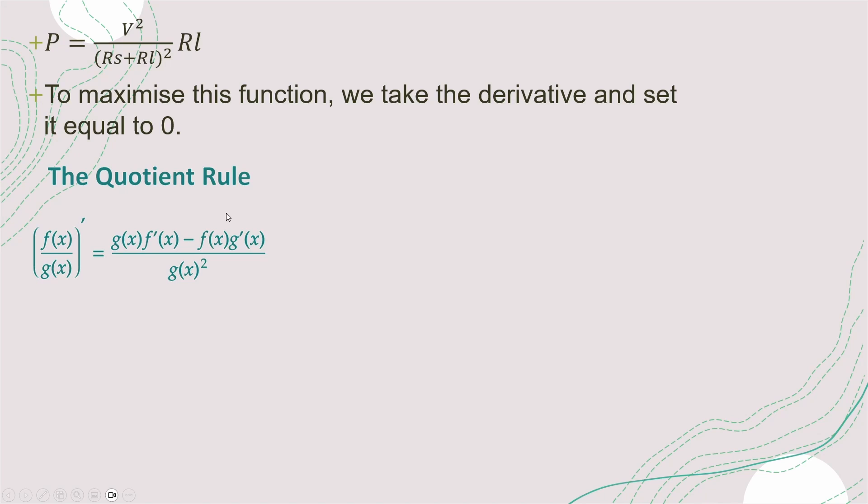So again, I've put the equation back down here. So our power dissipation across the load resistor is equal to V squared divided by RS plus RL all squared times by RL. So we take the derivative and set it equal to zero. Now, when we take the derivative, there's an important rule that we can use here to make our life a little bit easier. It's called the quotient rule. And that basically tells us that the derivative of a function like this, where you have one divided by the other, you can use this where your G is the bottom value and your F is the top value. So we have G times the derivative of F minus F times the derivative of G divided by G squared. So let's note down what each of these G and F values are.